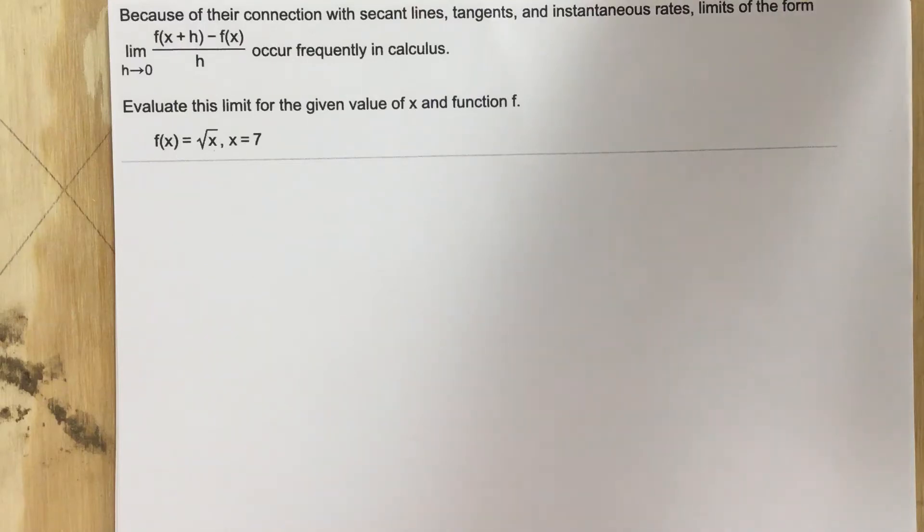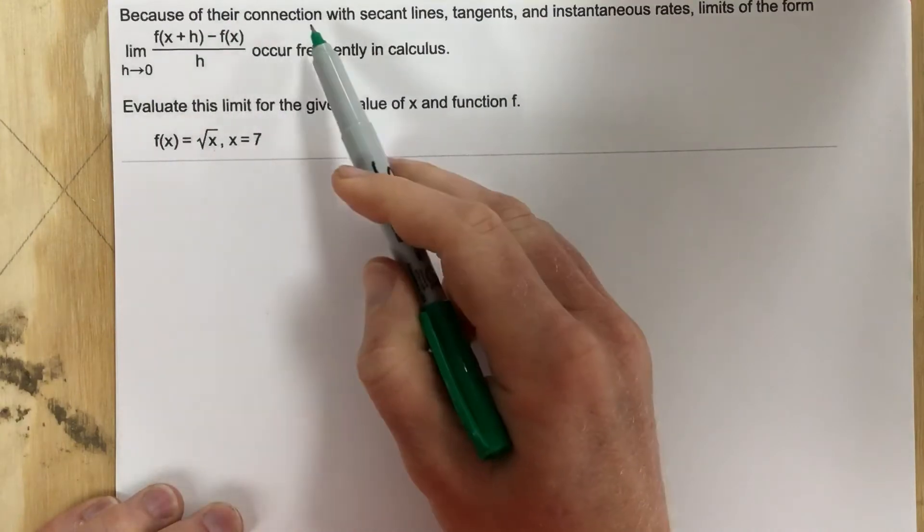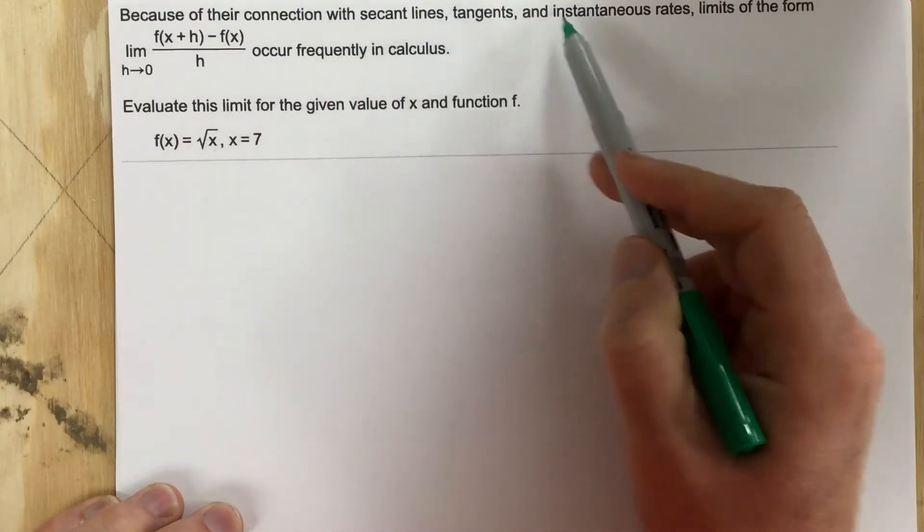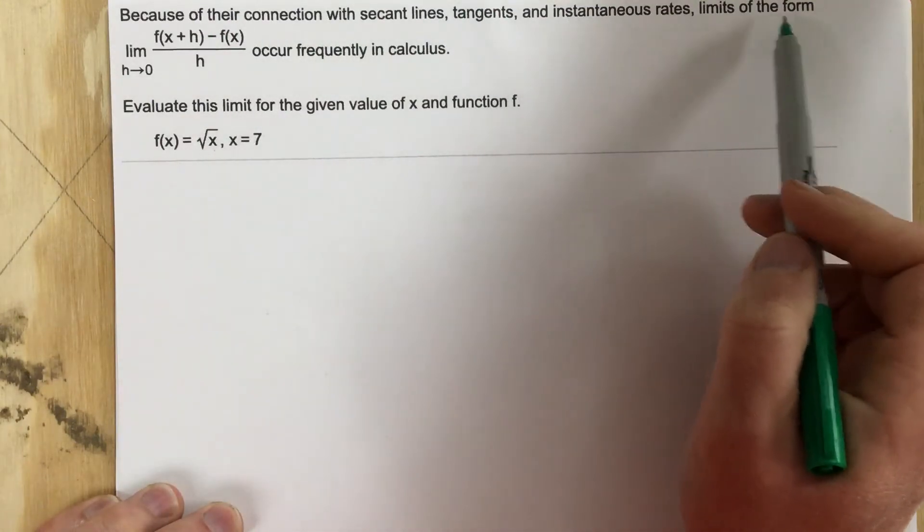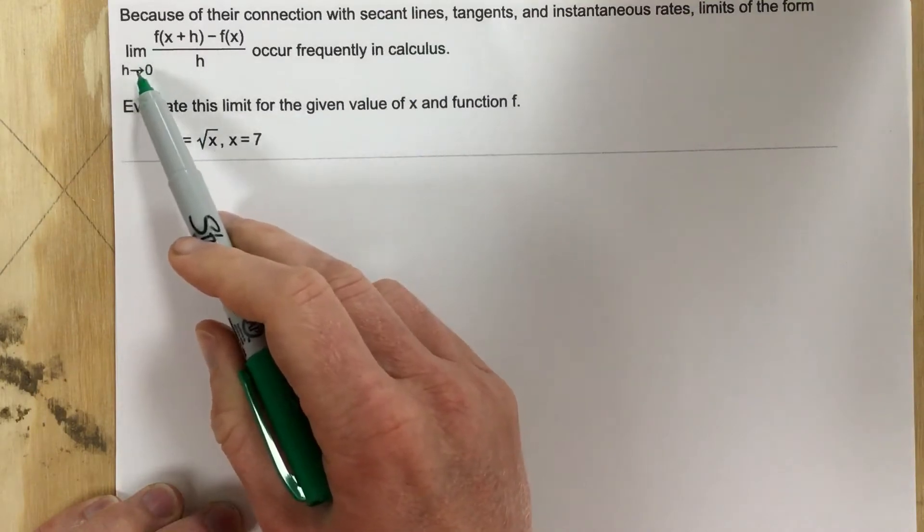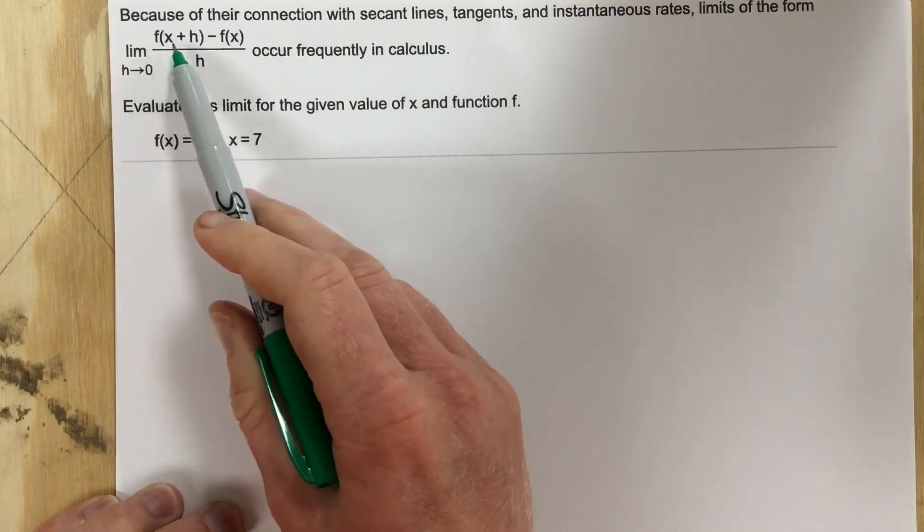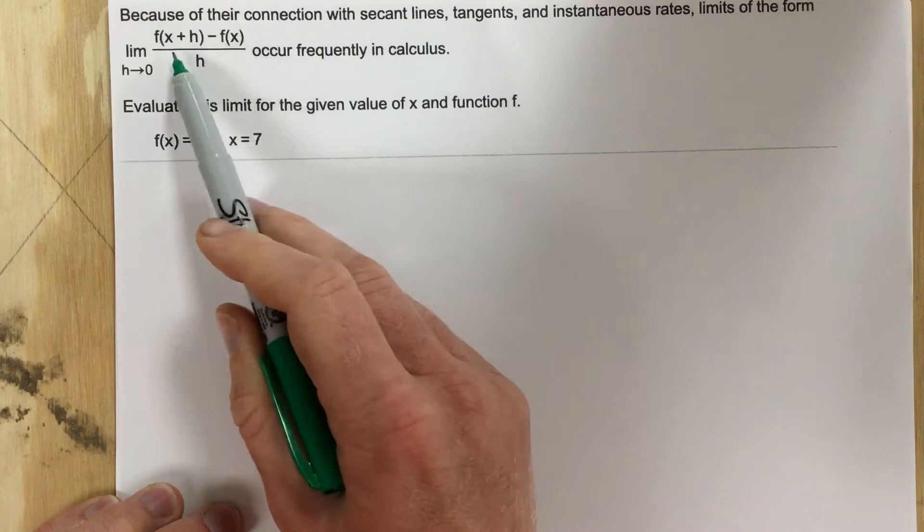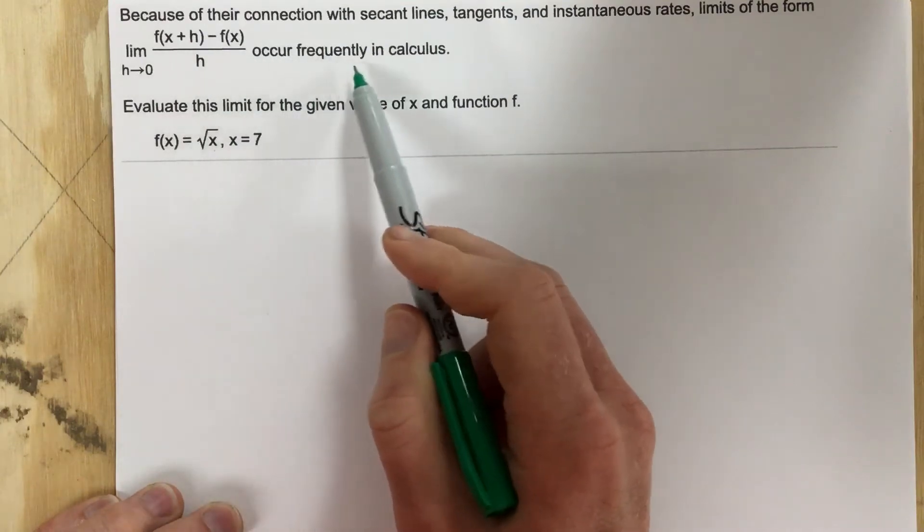This is problem number 10 for section 2.2. In this problem it says, because of their connection with secant lines, tangents, and instantaneous rates, limits of the form limit as h approaches 0 of f of x plus h minus f of x all over h occur frequently in calculus.